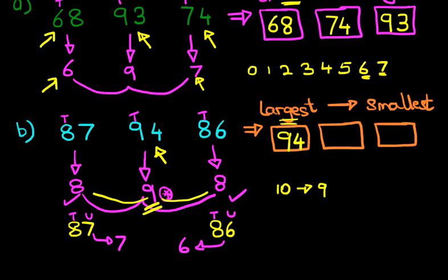Which is larger, seven or six? Well, let's count backwards. Ten, nine. Before nine comes eight, and before eight, there is seven. There it is, the seven. So therefore, the next number is 87. That leaves the last number, 86.